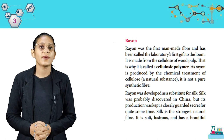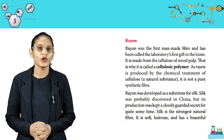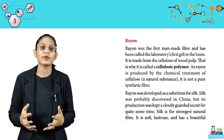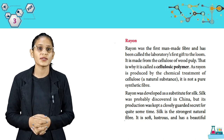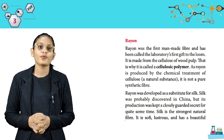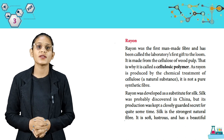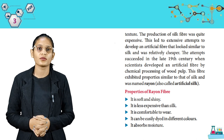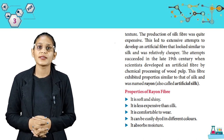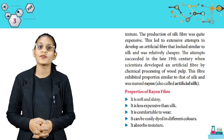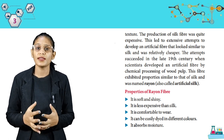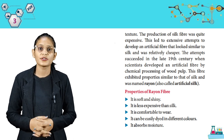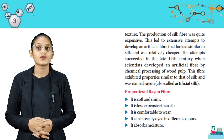Rayon was the first man-made fiber and has been called the laboratory's first gift to the loom. It is made from the cellulose of wood pulp, which is why it is called a cellulosic polymer. As rayon is produced by the chemical treatment of cellulose, a natural substance, it is not known as a pure synthetic fiber. Rayon was developed as a substitute for silk. Silk is the strongest natural fiber — soft, lustrous, and with a beautiful texture. The production of silk fiber was quite expensive, which led to extensive attempts to develop an artificial fiber similar to silk. In the late 19th century, scientists developed an artificial fiber by chemical processing of wood pulp. This fiber exhibited properties similar to silk and was named rayon, also called artificial silk.